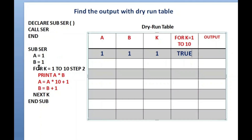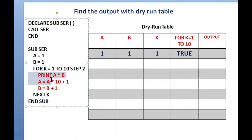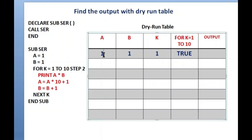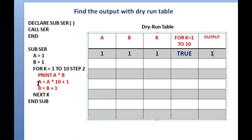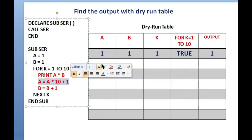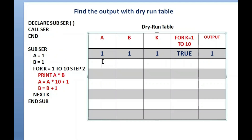When the FOR loop condition is TRUE, the three lines of code are executed. First line: PRINT A * B. Value of A is 1, value of B is 1, so 1 * 1 = 1 is printed in the output screen. Next: A = A * 10 + 1, so 1 * 10 + 1 = 11. Value of A is now 11. Then B = B + 1, so 1 + 1 = 2.